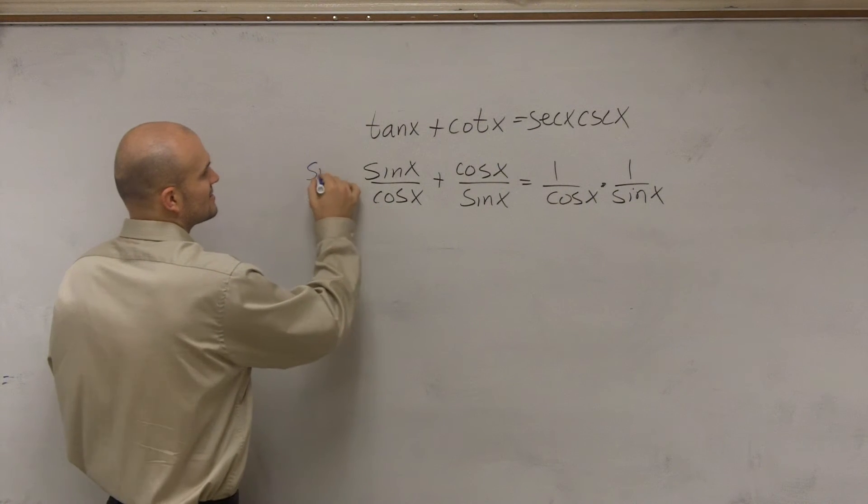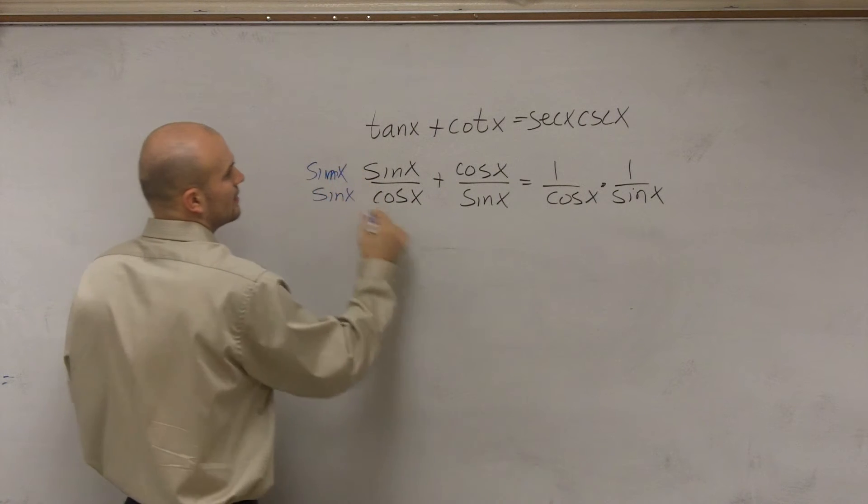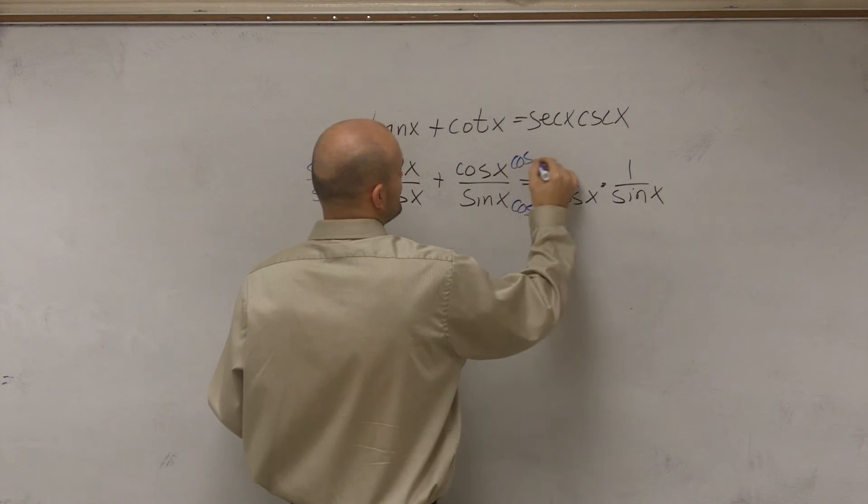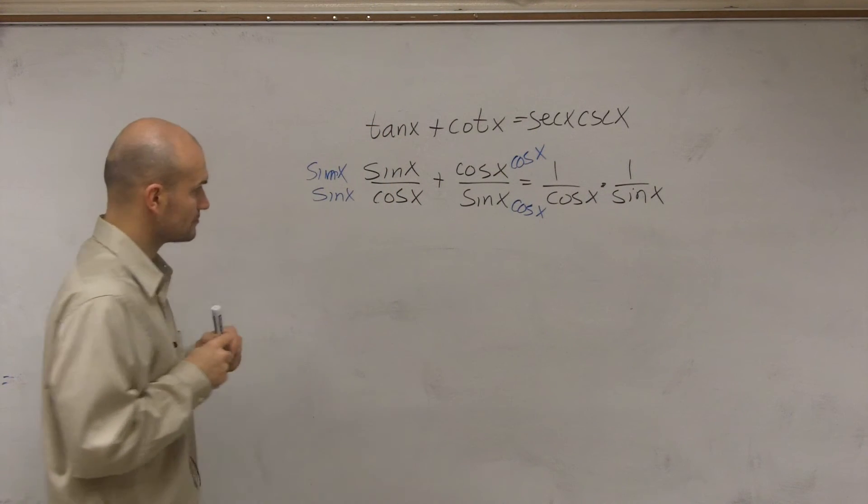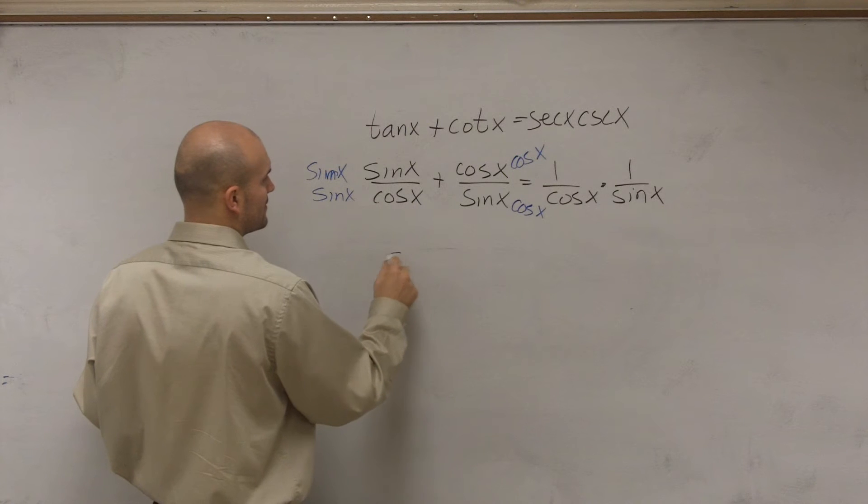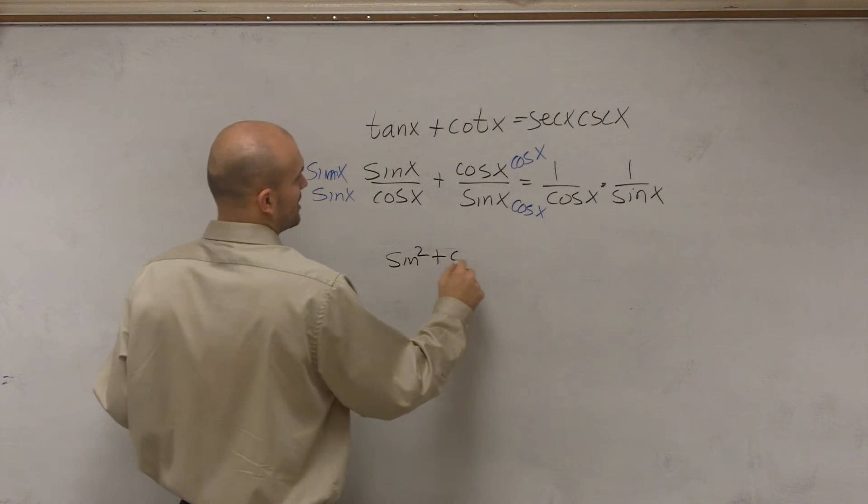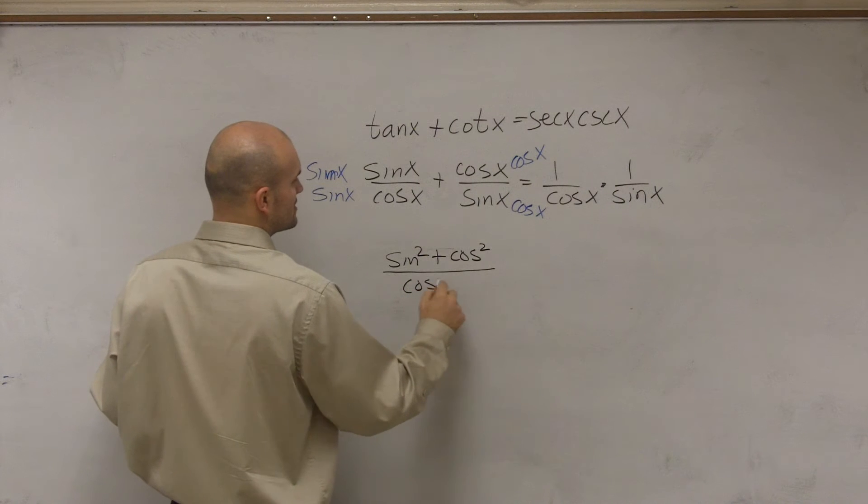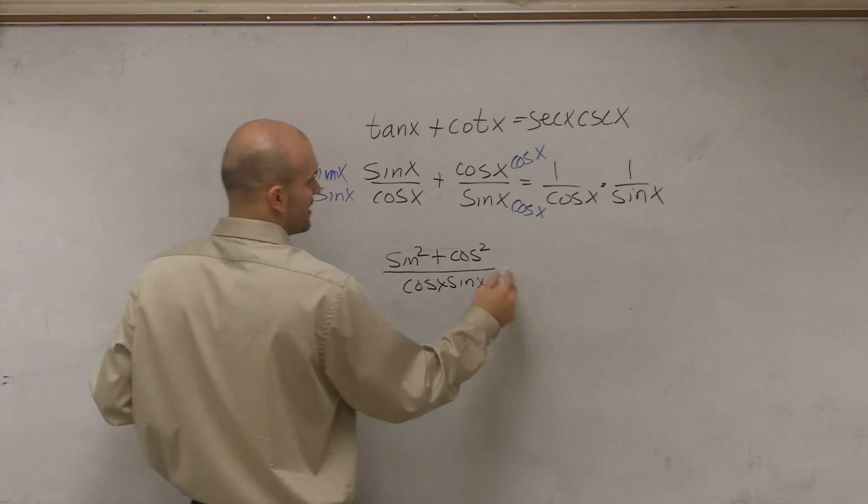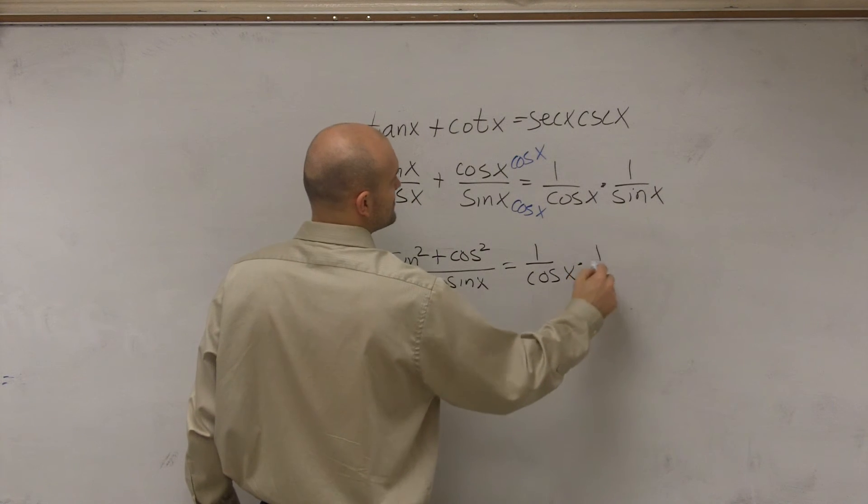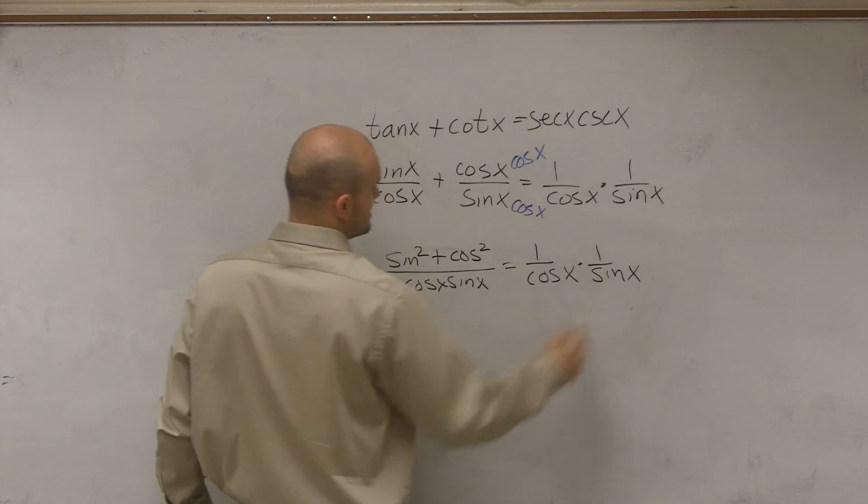So I can say sine of x times sine of x. And then here I'd multiply by cosine of x times cosine of x. Therefore, on the top I have sine squared plus cosine squared divided by cosine of x, sine of x, equals 1 over cosine of x times 1 over sine of x.